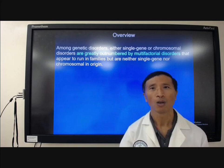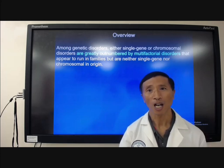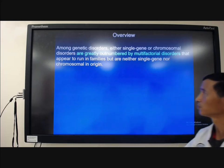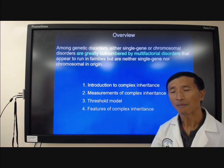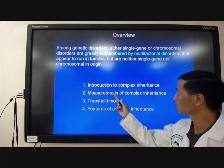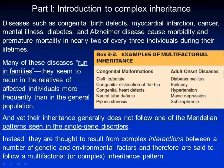Today we are going to look at multifactorial disorders and we will cover four topics. First, I'm going to give you an introduction to complex inheritance. Here are examples of multifactorial disorders such as cleft lip, congenital heart defects, pyloric stenosis, epilepsy, and hypertension.